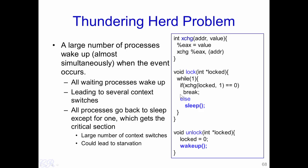One issue with mutexes is what is known as the thundering herd problem. This problem occurs when we have a large number of processes all using the same critical section and invoking the lock to enter it. At the end of the critical section, a process invokes unlock which would wake up other processes waiting for the critical section. It could happen that there are several processes in sleep mode while one process is in the critical section, and when that process executes unlock it invokes wakeup, resulting in all sleeping processes being woken up.